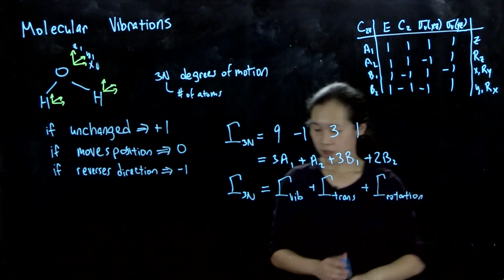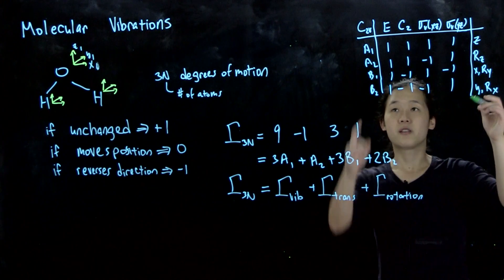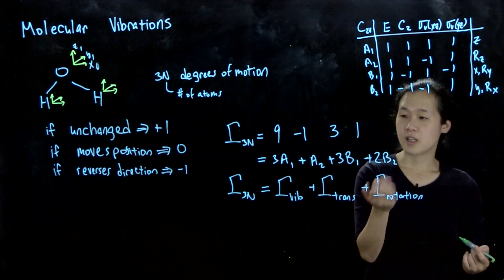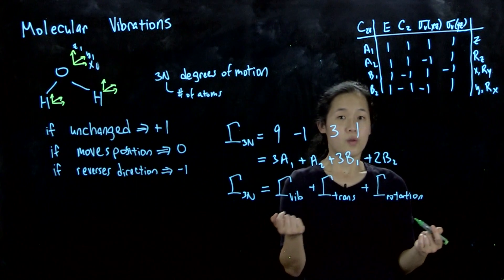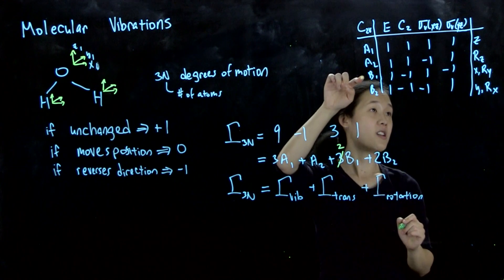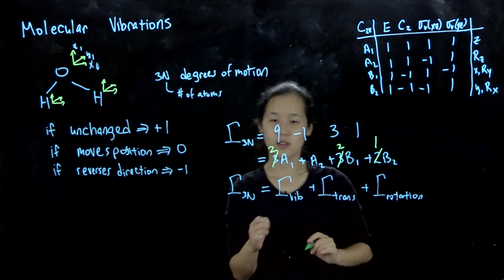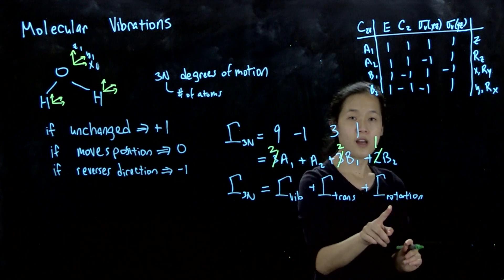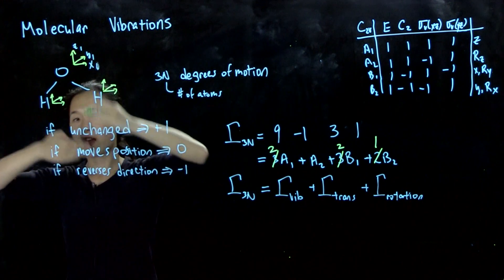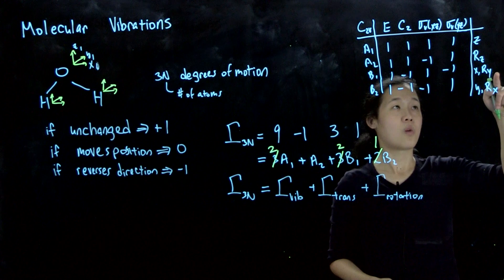We can identify the translational and rotational modes from the character table. Motion in x, y, and z corresponds to b₁, b₂, and a₁ respectively. So one of our b₁s is x translation, one of our b₂s is y translation, and one of our a₁s is z translation. For rotation, we also have three rotational modes — rotating about the z, y, or x axis — so we need to subtract out modes corresponding to Rₓ, Rᵧ, and R_z.